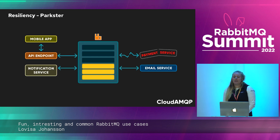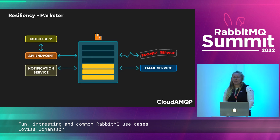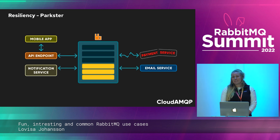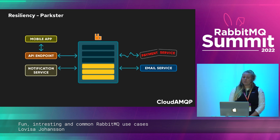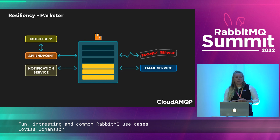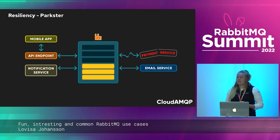Applications might be delayed or crash sometimes. Another thing Parkster really likes about its system today is that it can still be operational even if part of the processing is delayed or broken — just because one small part is down doesn't mean the rest of the system has to stop. The consumer can park the car and get the parking confirmation ticket without knowing that the payment service is down.